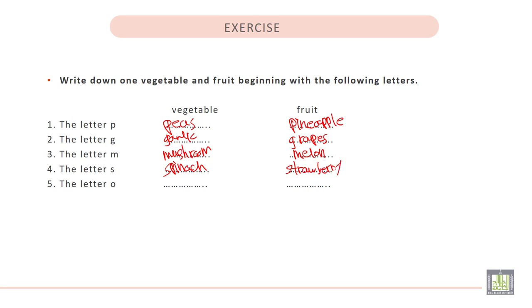And the last one, the letter O. Vegetable: onion. Fruit: orange.